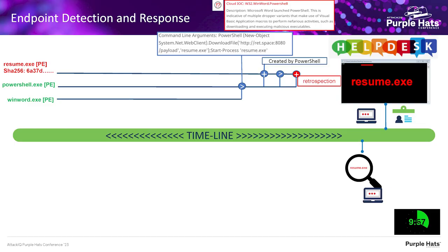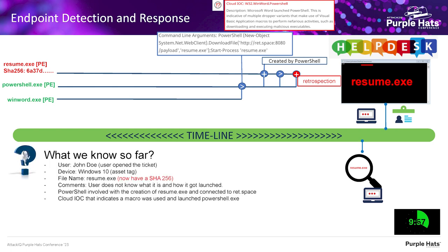Summarizing what we now know: we have the SHA-256, PowerShell was involved in creating resume.exe, it connected to ret.space making an outbound internet connection, and the cloud-based IOC indicates a macro relationship between WinWord, PowerShell, and this bad file. We already know something's not good here. But if you stopped here and just blocked or re-imaged the asset, reinfection would occur. We need to go back in the timeline and understand how WinWord got involved.